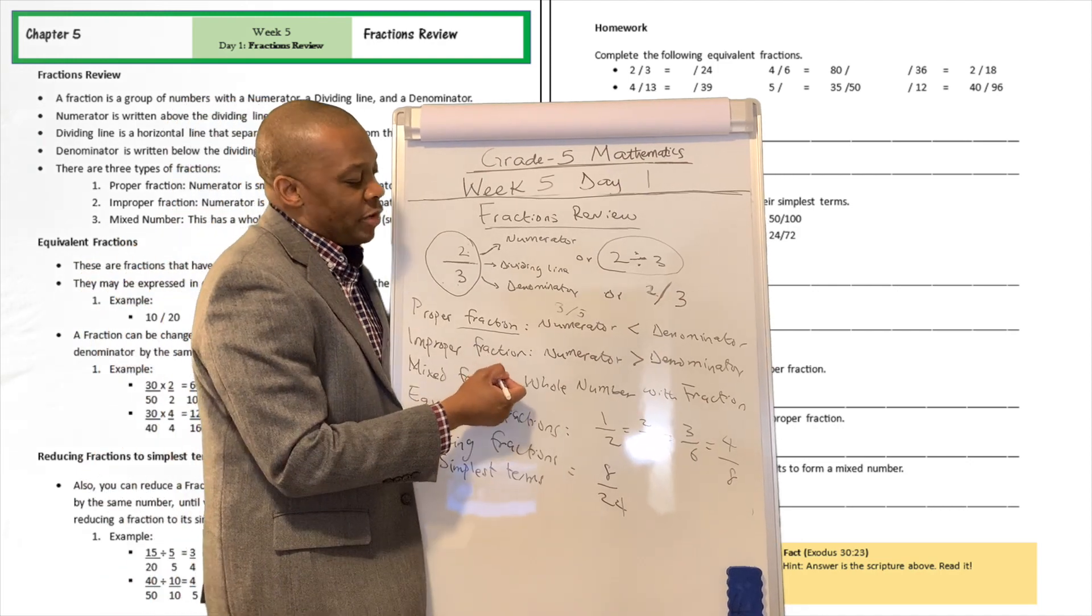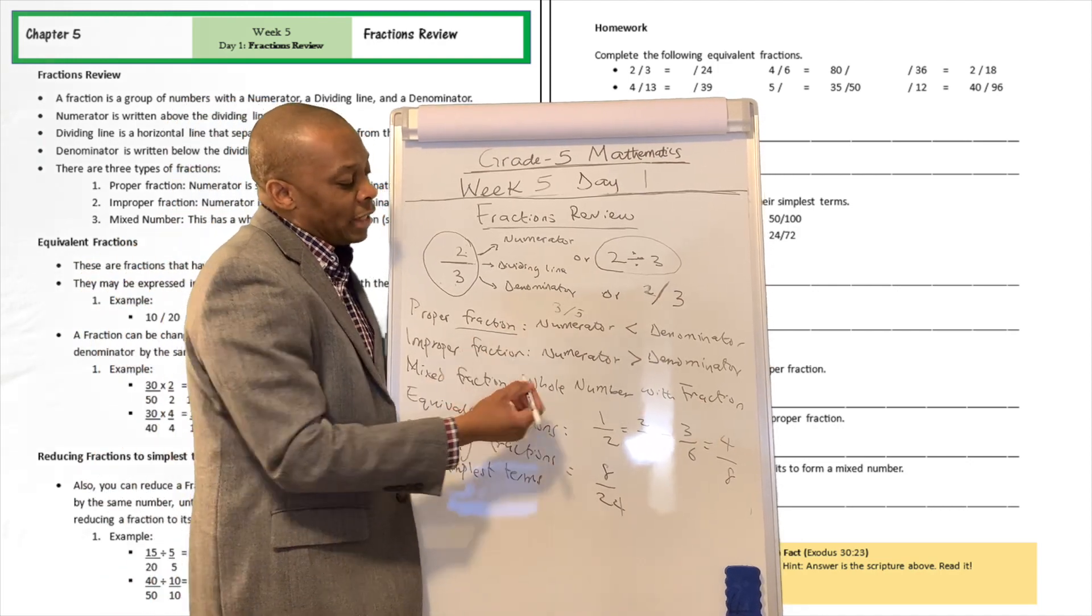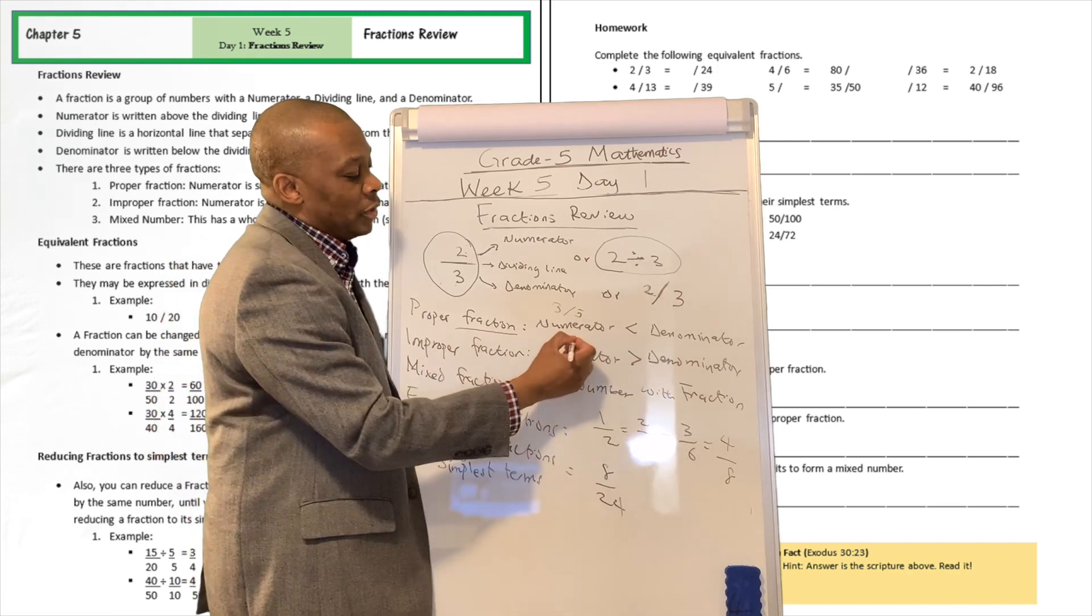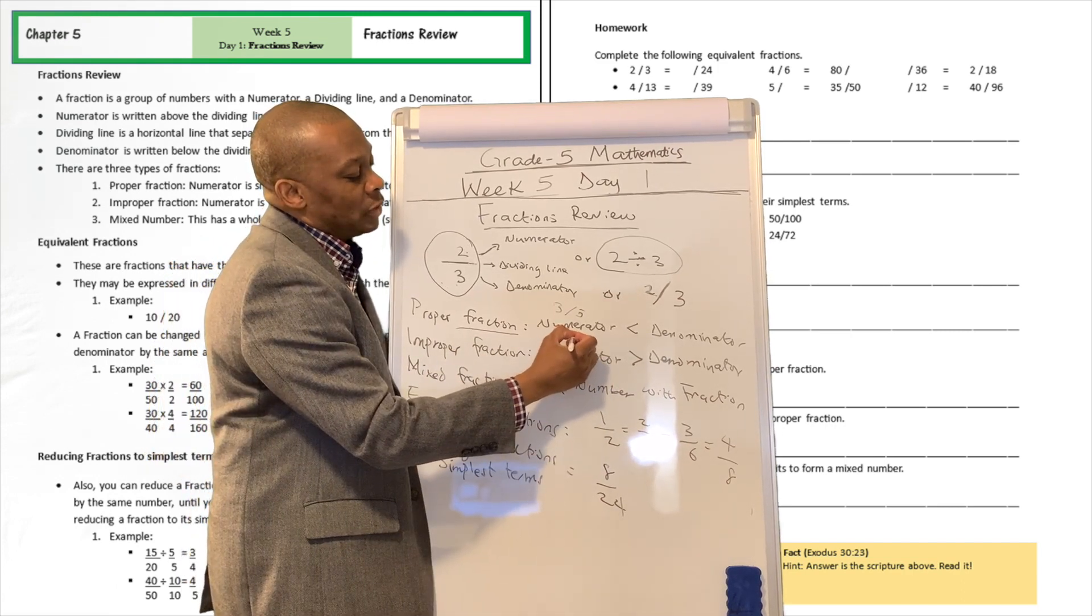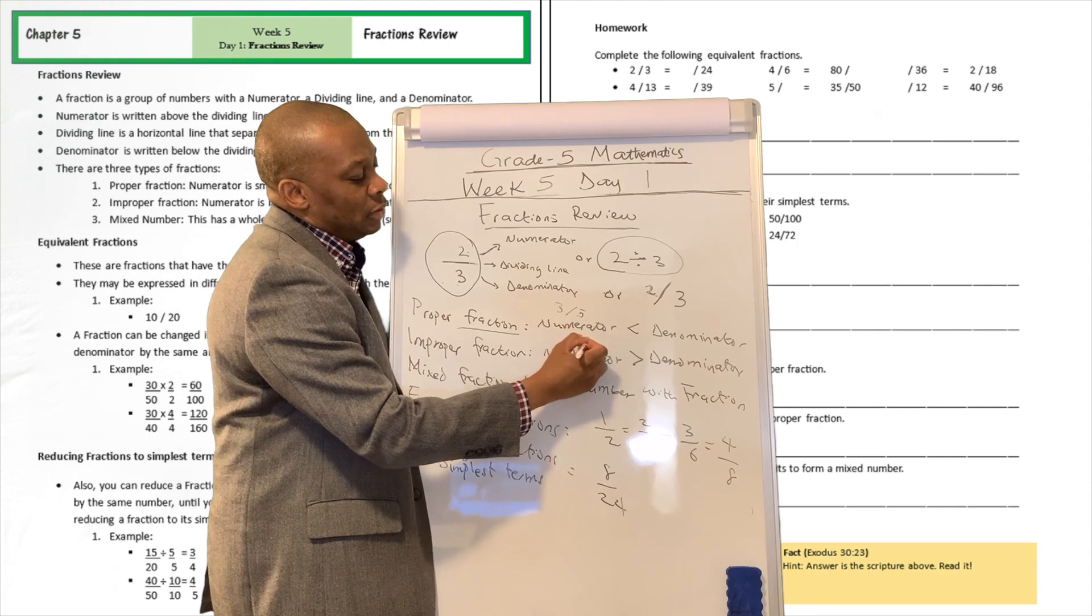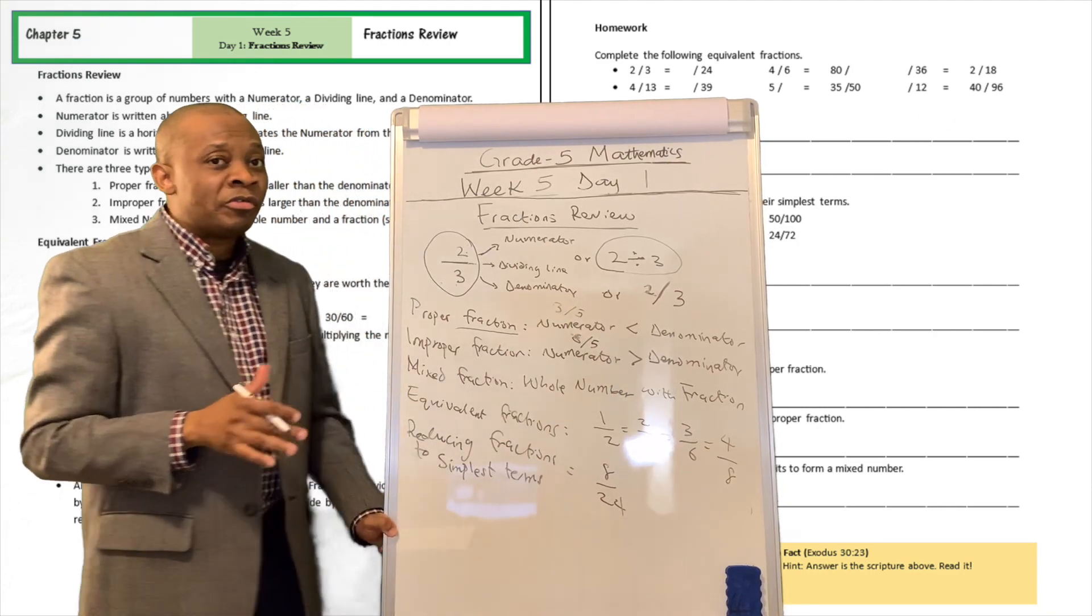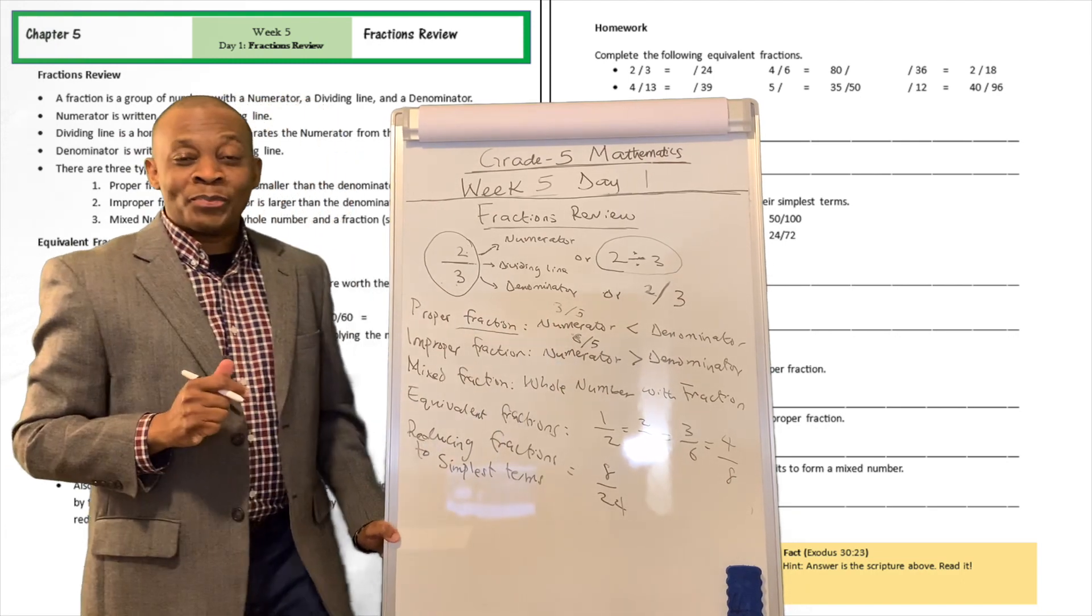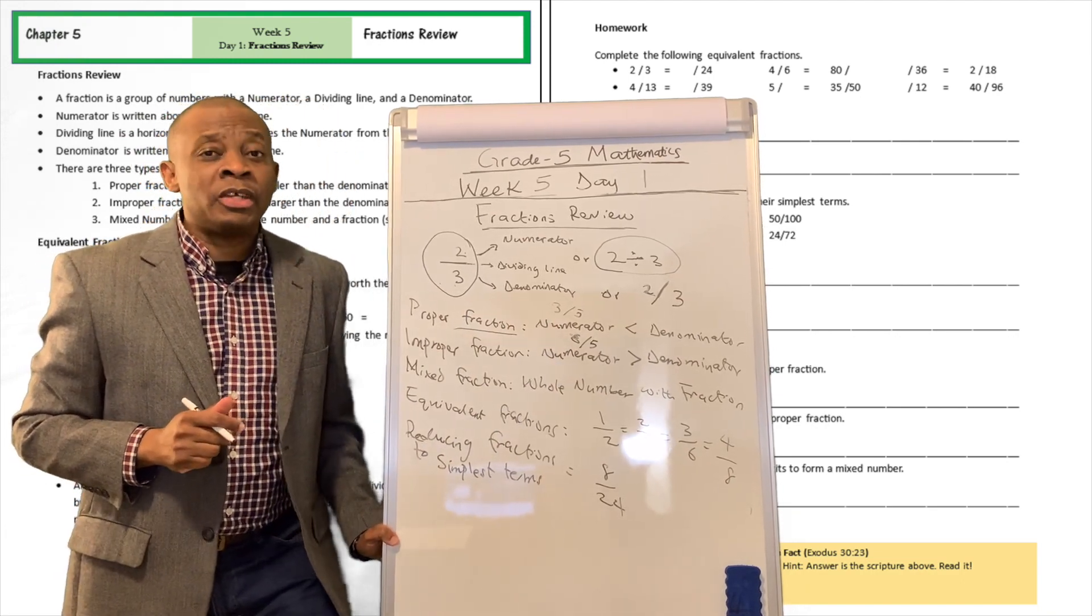An improper fraction, on the other hand, the numerator is going to be greater than the denominator. So for example, if you were to have things like six divided by five, well, that's an improper fraction because the numerator is greater than the denominator. Can you think of another example?